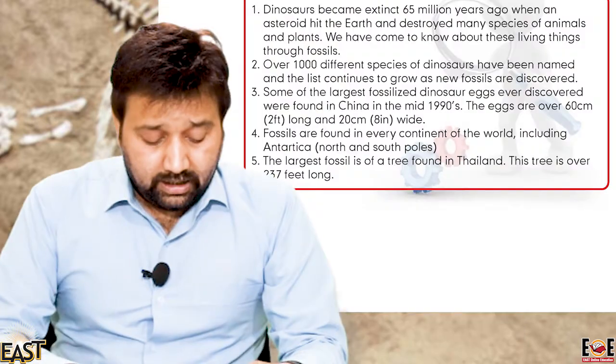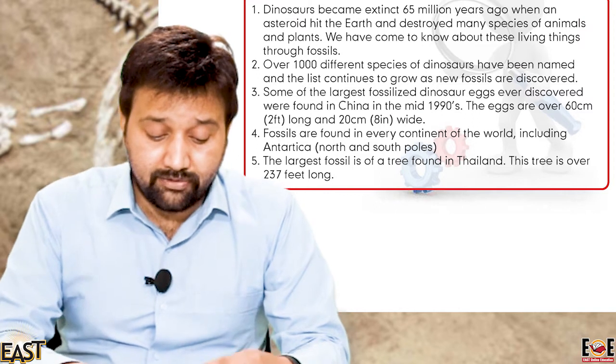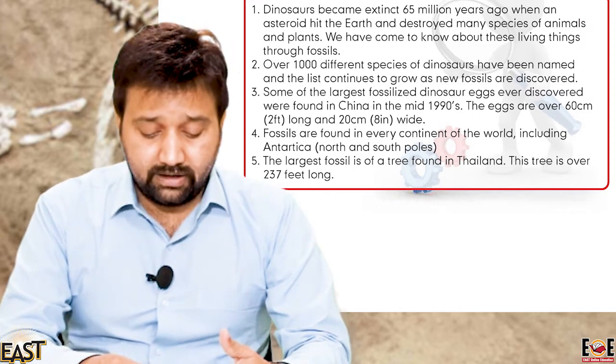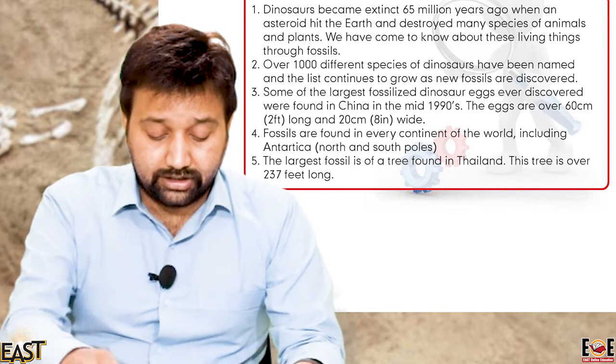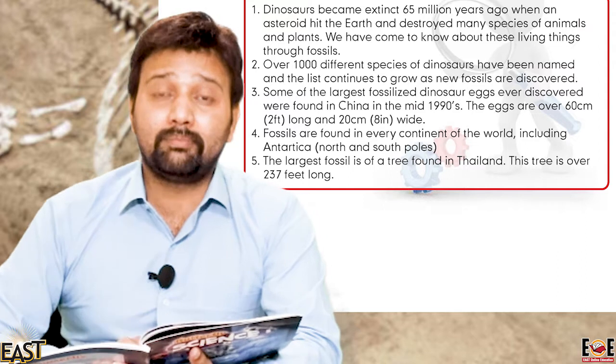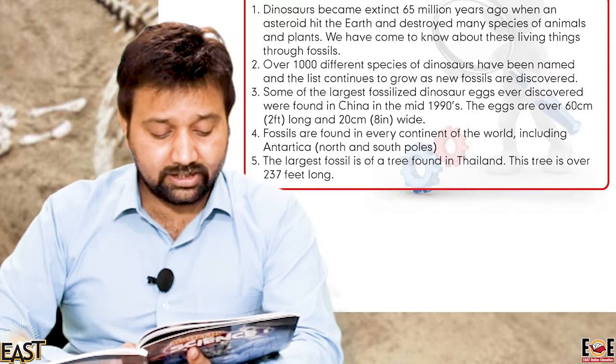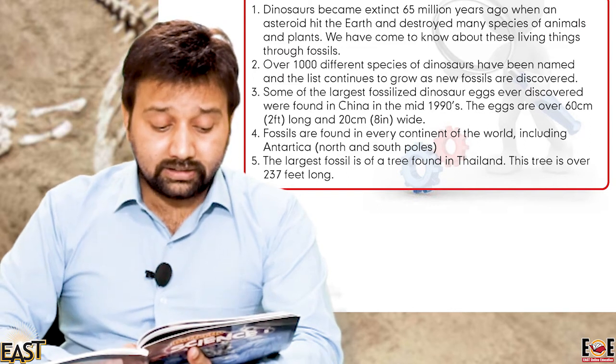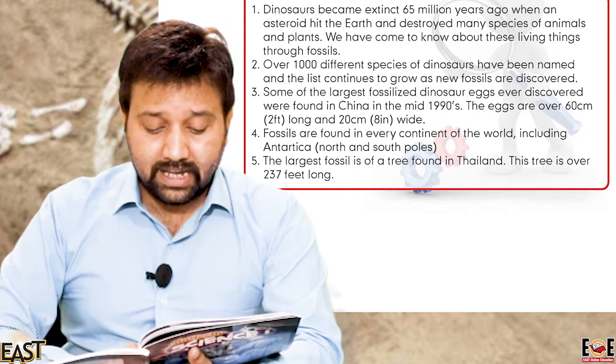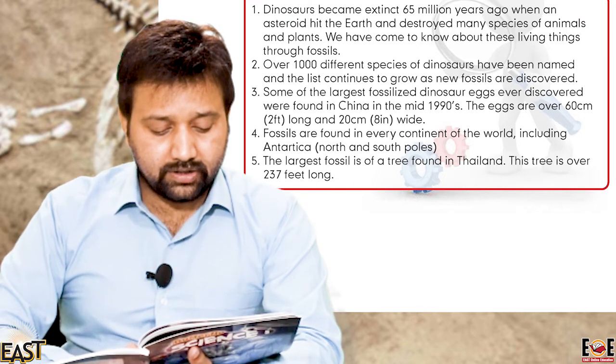I have read page number 29 and now for your home assignment you have to read page number 30 and complete the topic. In this chapter at the end we have interesting facts. Dinosaurs became extinct 65 million years ago when an asteroid hit the Earth and destroyed many species of animals and plants. Over 1,000 different species of dinosaurs have been named and the list continues to grow as new fossils are discovered.